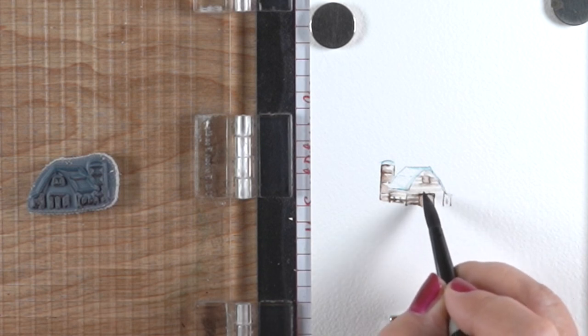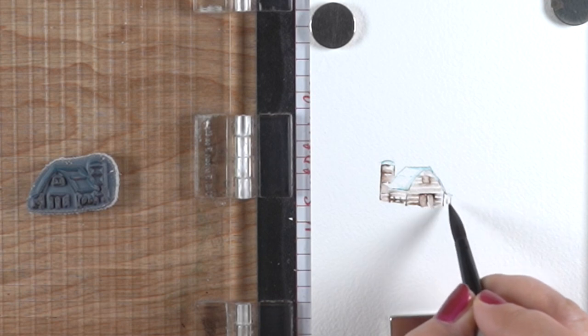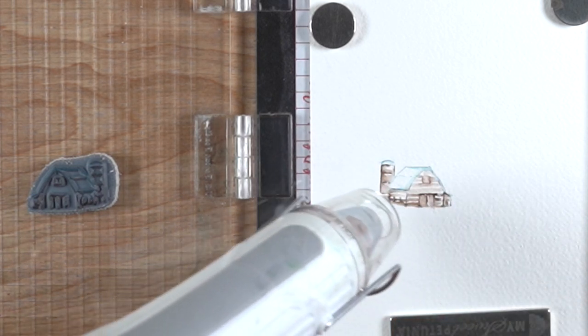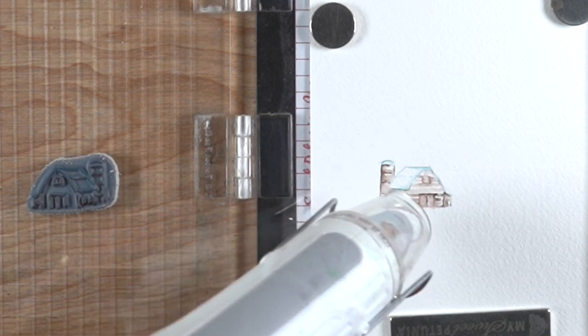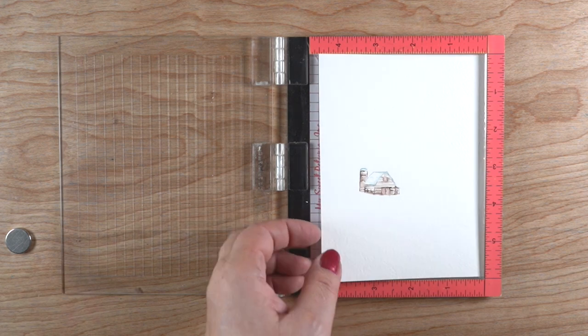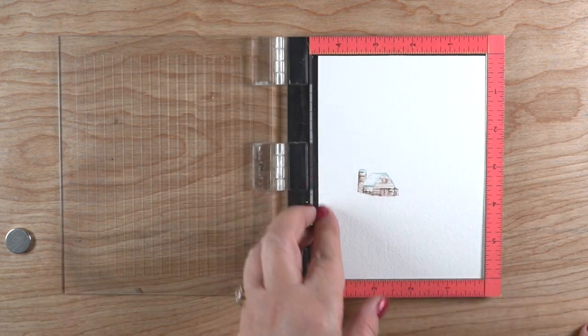I tend to use more water than a lot of people sometimes in my stamped watercolor. Managing that and knowing how wet something is and whether or not a color is going to bleed into it is an important thing to figure out. I will dry that up so that then I can start moving on to the next portion of this.